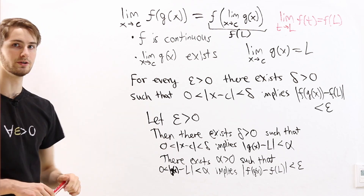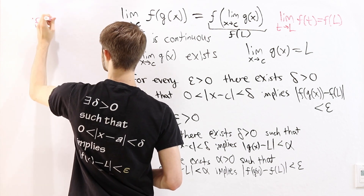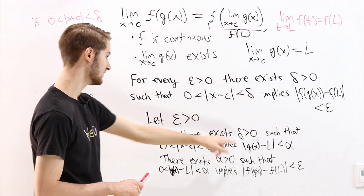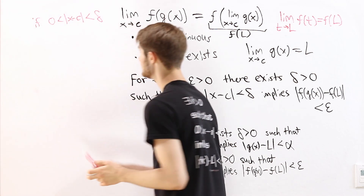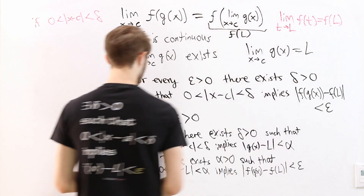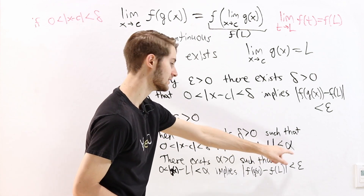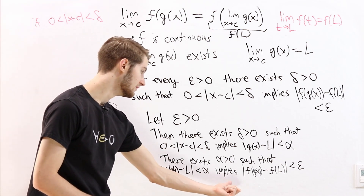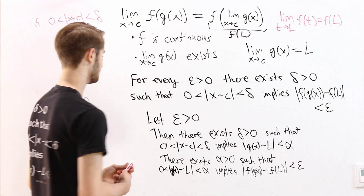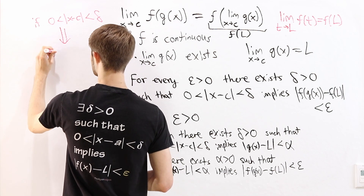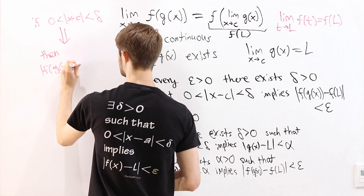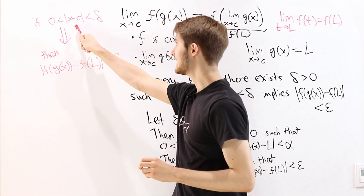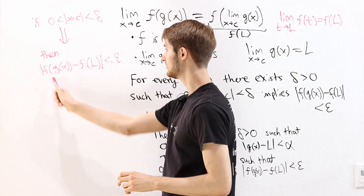So we start with our epsilon greater than 0 and ask: what happens if the distance from x to c is less than delta? We know that this delta exists from the definition of the limit for g of x. From this first condition, we know that the distance from g of x to L is less than alpha. But by the definition of alpha, if the distance from g of x to L is less than alpha, then this second condition also has to be true. So this implies that the distance from f of g of x to f of L is less than epsilon.